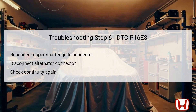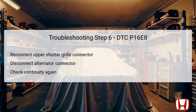For step six, reconnect the upper shutter grille 4P connector, ensuring there is a proper connection to facilitate accurate tests on the wiring. You will then disconnect the alternator 1P connector to isolate variables during the continuity check. Again, assess continuity between the alternator terminal and the body ground, while maintaining appropriate conditions such as placing the vehicle in off-lock mode. If continuity is confirmed, it indicates that the wiring and connections are likely intact. If not, the issue may reside in a malfunctioning upper shutter grille, which should then be replaced to resolve the communication error.